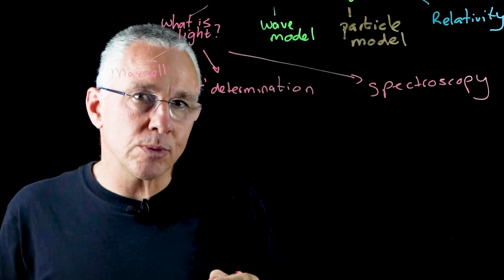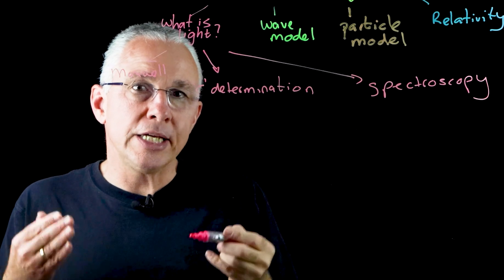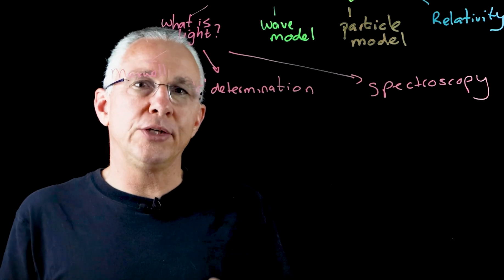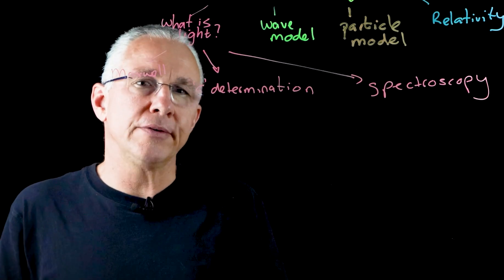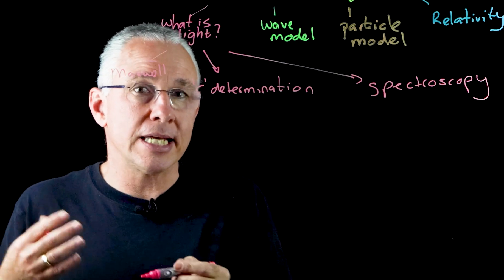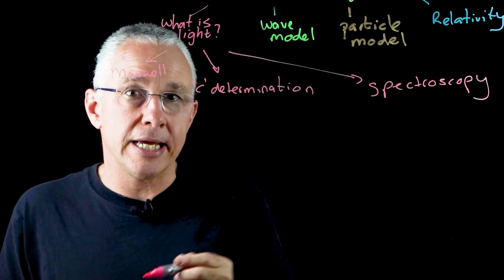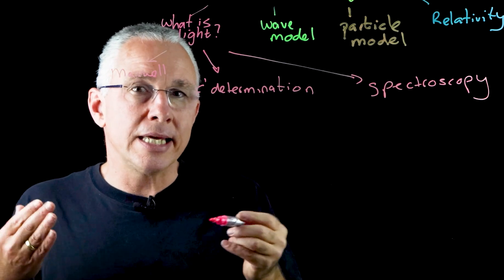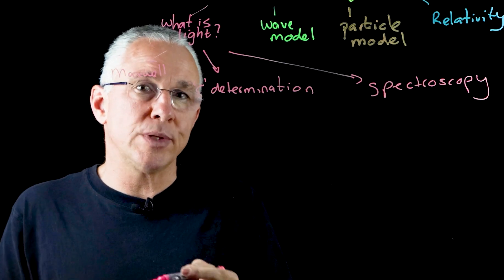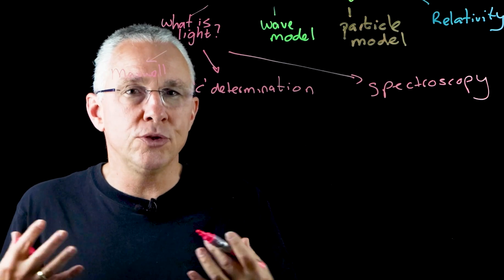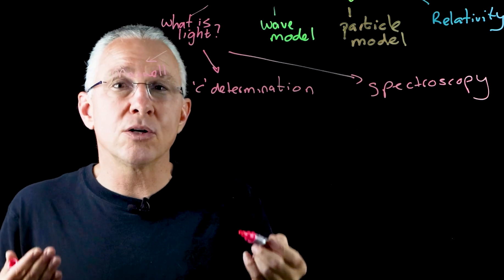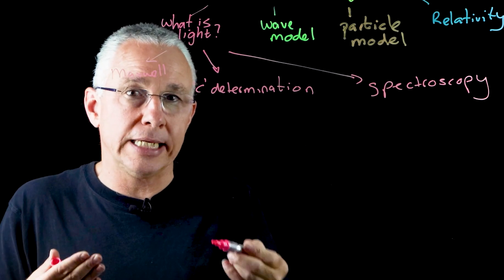Now, in terms of Maxwell, it was his work in unifying, and that's the key word here, unifying electric field theory and magnetic field theory, as established by Faraday a number of years beforehand. He unified those two theories into what we now call electromagnetic theory.